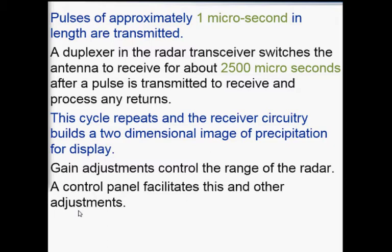Gain adjustments control the range and precision of the radar. A control panel facilitates gain and other adjustments. By adjusting the gain, you are adjusting your transmitter and receiver to create more precise information related to the weather.